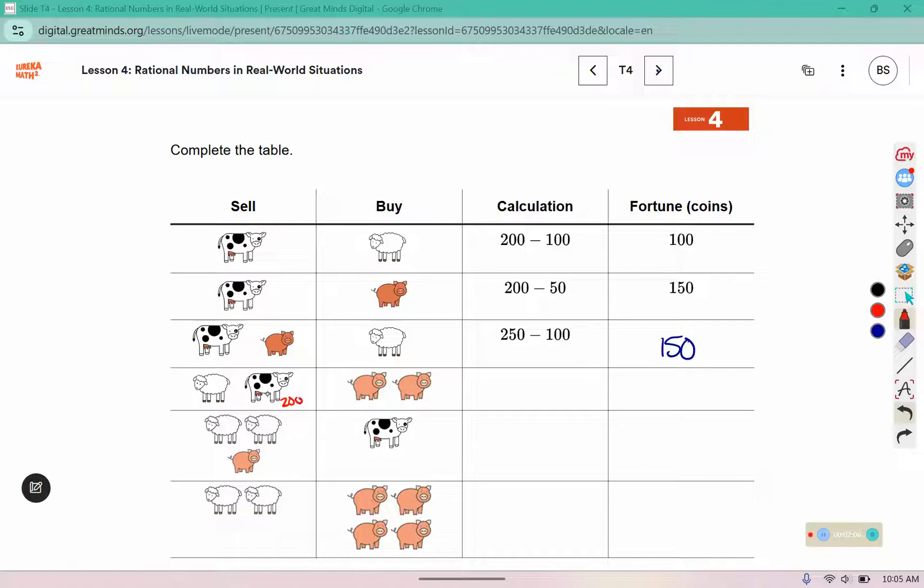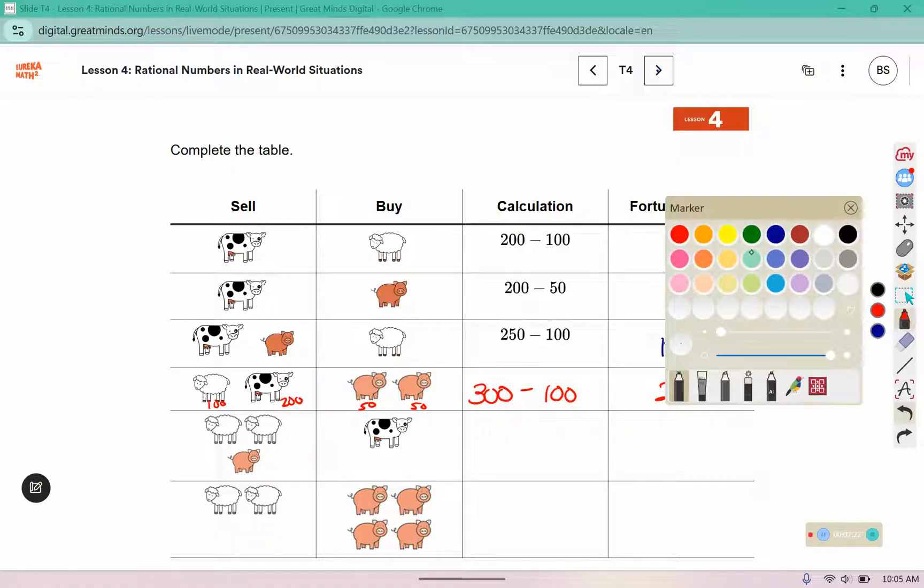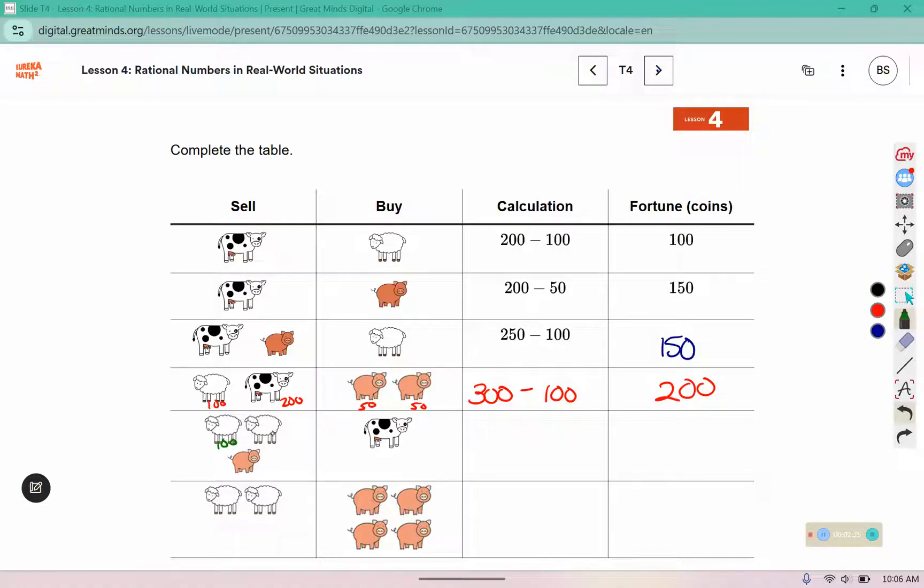The cow is 200, so they sell 300 coins worth. And these two pigs are worth 50 each, so they bought 100 worth. 300 minus 100 is 200. We have 100 for each sheep, giving us 200, and 50 for the pig, and the cow is worth 200. 250 minus 200 is 50.